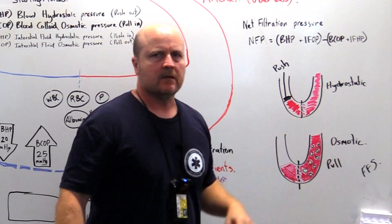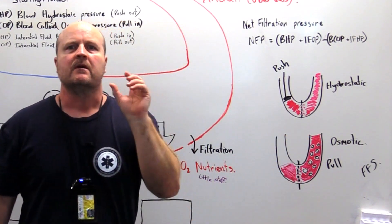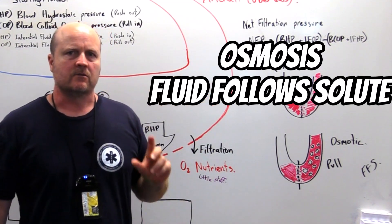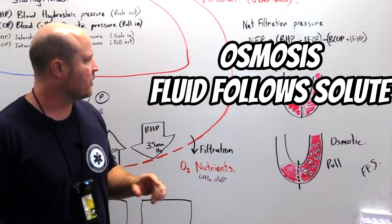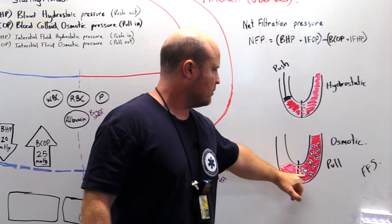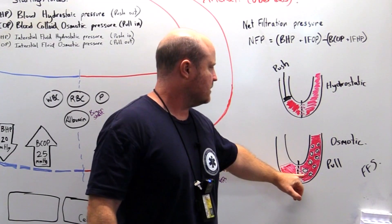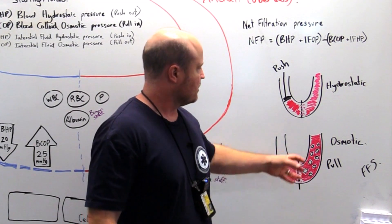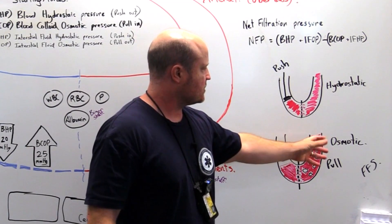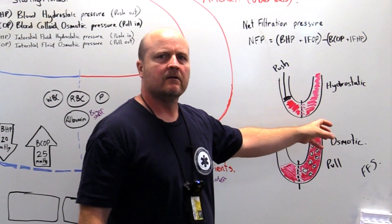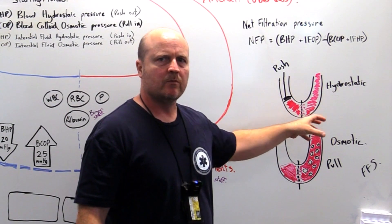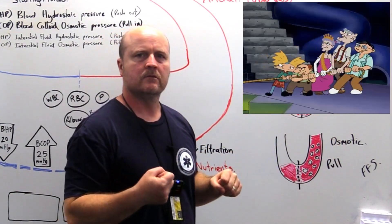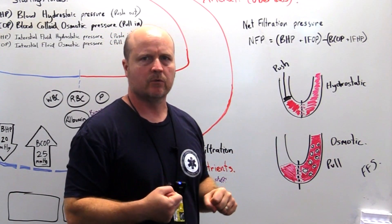With osmotic pressure, remember FFS — fluid follows solute. Fluid is going to move through a semi-permeable membrane towards an area of high solute concentration. So if we've got lots of solutes on one side of a semi-permeable membrane, they're going to pull fluid towards them.